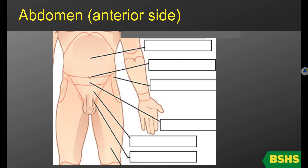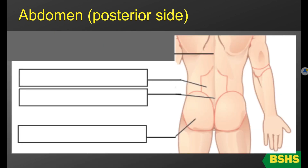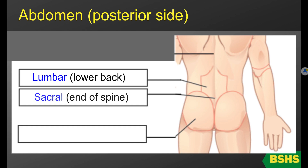Now let's talk about the regions of the abdomen. On the anterior side, you have the abdomen. The umbilical — that's the belly button. Coxal is the hip. Pelvic is the area between the hip bones. Inguinal is the groin area. And pubic refers to the genitals. On the posterior side, you have the lumbar — that's the lower back. Sacral is the end of the spine. And gluteal refers to the buttocks.